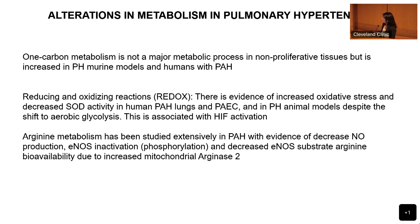I'll briefly cover arginine metabolism, which will be discussed in more detail in other slides. This is a lot of work by Dr. Urzurum and her team here and by several other groups. This pathway is very important in PAH and is targeted — it has FDA-approved therapy used to treat patients with pulmonary hypertension. In PAH, there's decreased nitric oxide production, reduced nitric oxide synthase activity, decreased arginine bioavailability for NOS to produce NO, and increased arginase that converts arginine into ornithine.